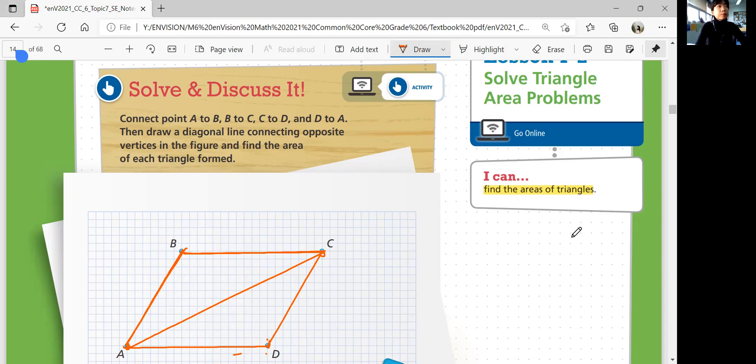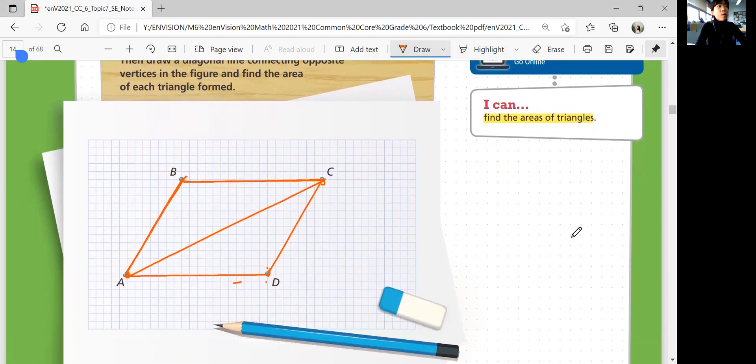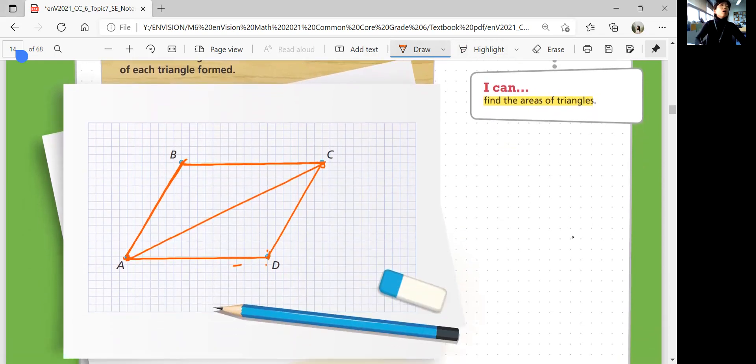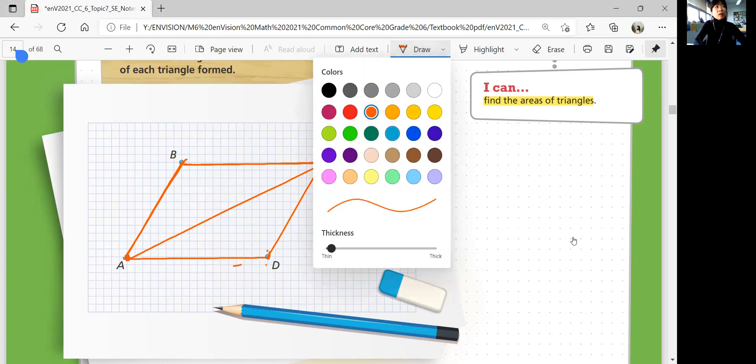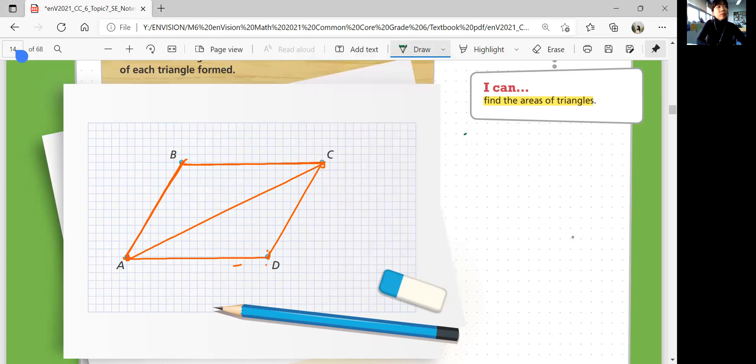So now we have two triangles. And let's try to figure out the area of these two triangles. First of all, what do you know about the area of the triangle? Well, some of you know that it's half of base times height. Some of you don't know. So let's start with the area of the parallelogram. Area of the parallelogram was base times height of parallelogram.